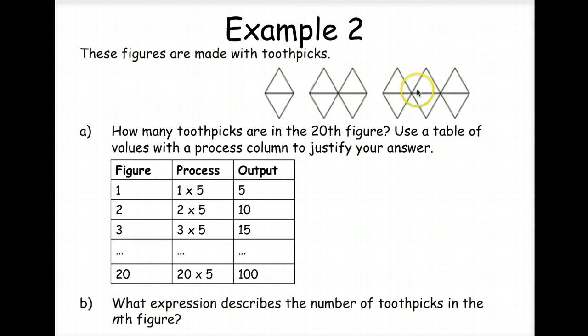Next, we have three connected figures, each having five toothpicks, so three times five is 15, and we can count that. So we can say that without drawing all the way to our 20th figure, that we know our process, we'll take our figure times five, we'll get a hundred toothpicks.